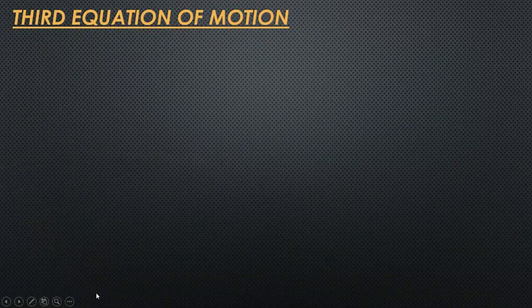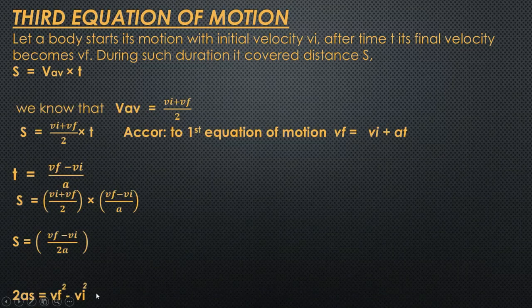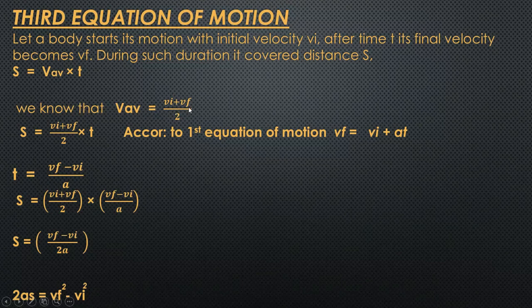This was our second equation of motion. Now the last and third equation of motion. The same setup applies: a body is moving with initial velocity v_i, after time t its final velocity becomes v_f, and the distance covered during this duration is s. The distance formula is s = v·t, and since the acceleration is uniform, we use average velocity: v_av = (v_i + v_f) / 2, which we substitute into the equation. t remains as it is.